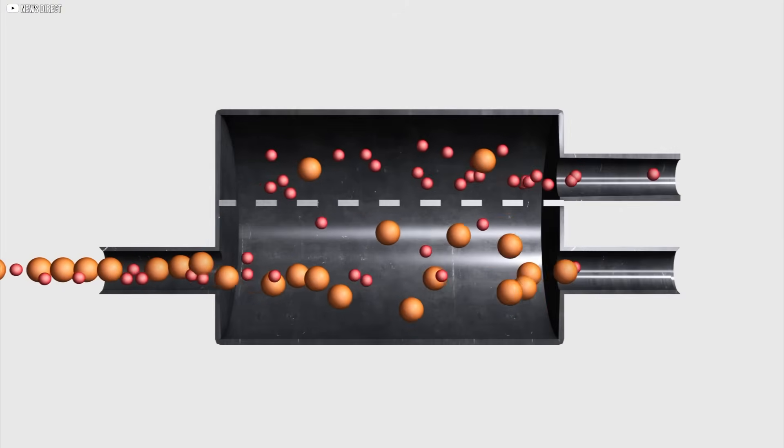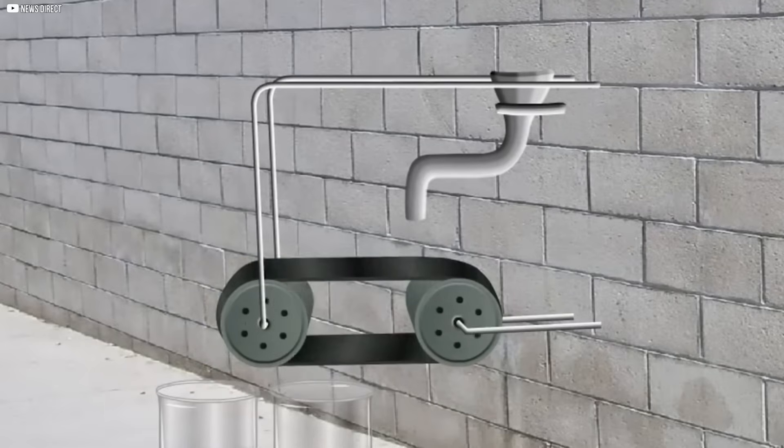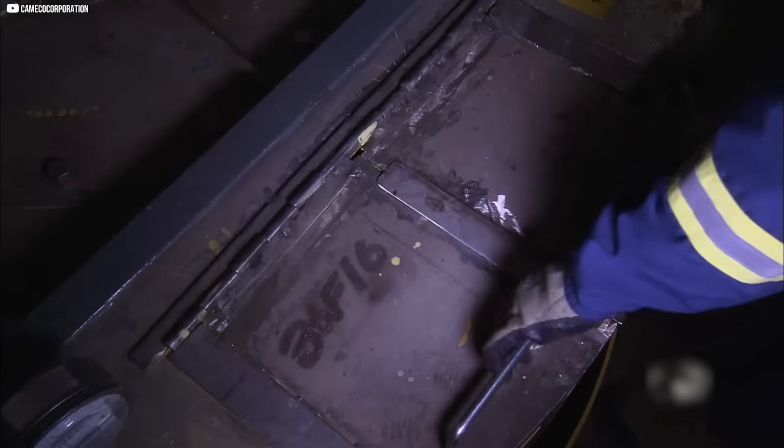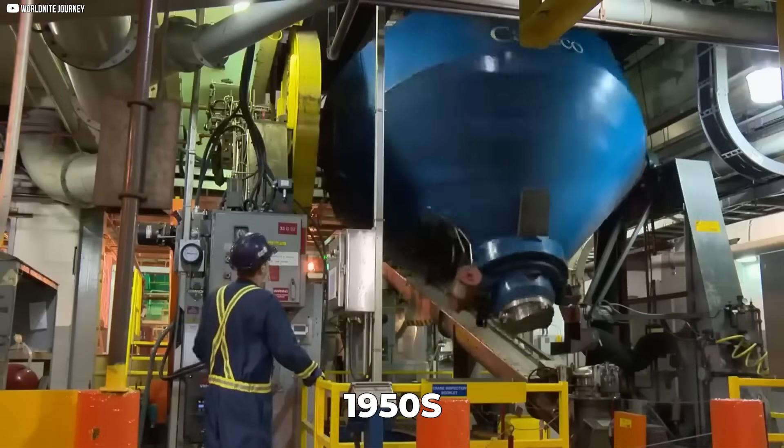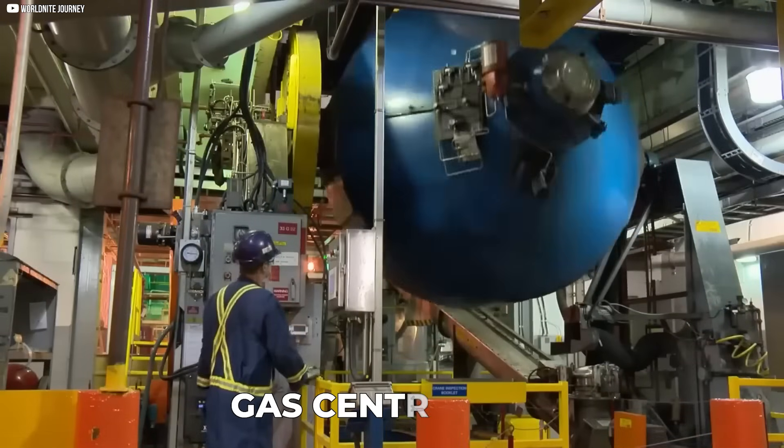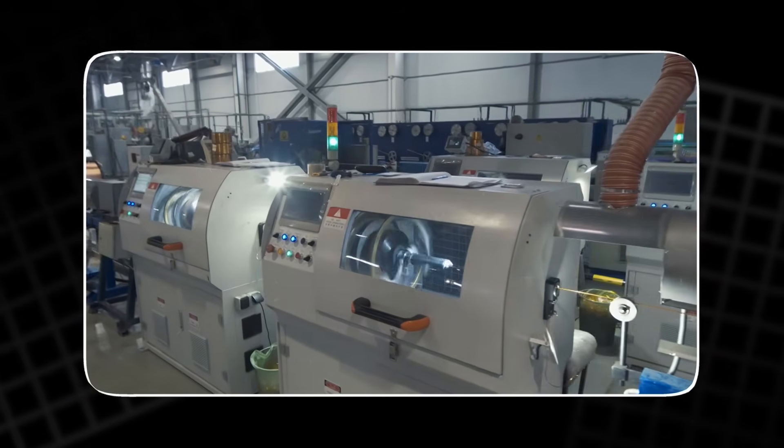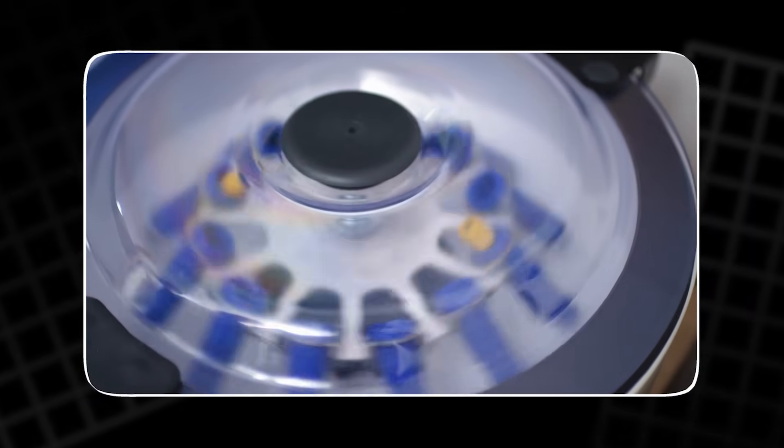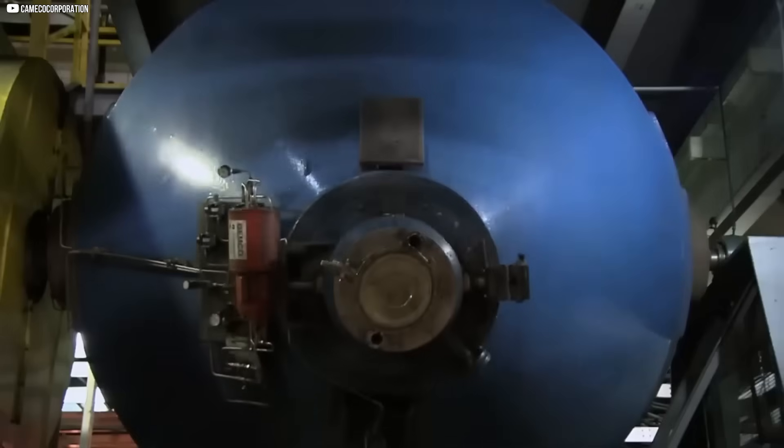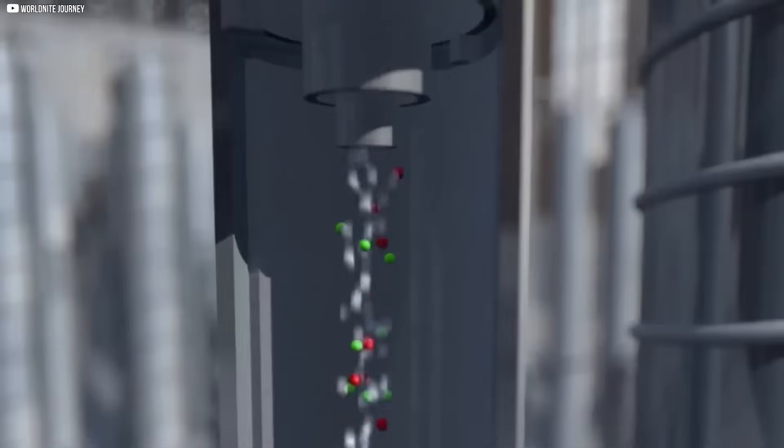In the past, techniques like gaseous diffusion and electromagnetic separation were used to separate uranium isotopes, but these methods were slow and energy-intensive. The real breakthrough came in the 1950s with the development of gas centrifuges. These machines spin uranium hexafluoride gas at incredibly high speeds, more than 50,000 revolutions per minute. The centrifugal force generated by the spinning separates the lighter uranium-235 from the heavier uranium-238.